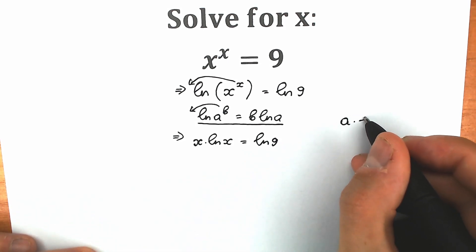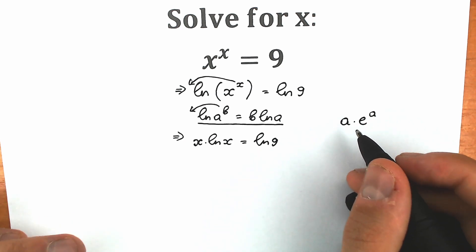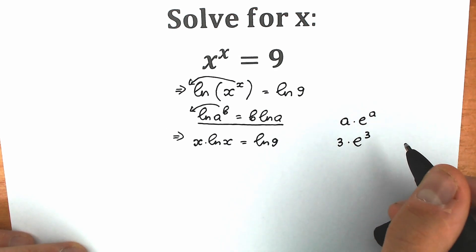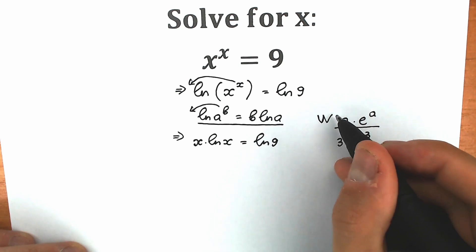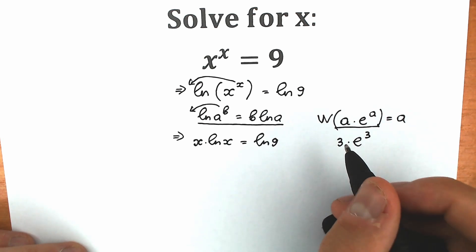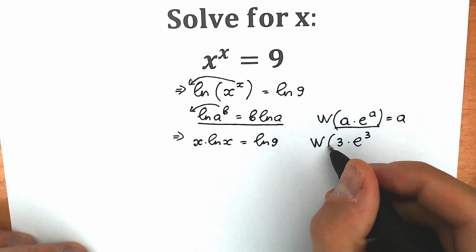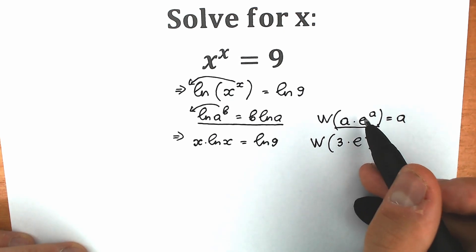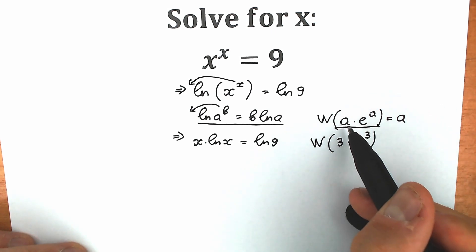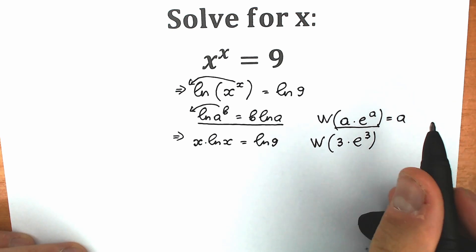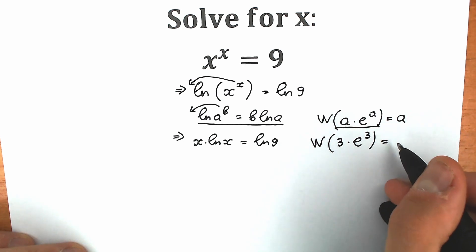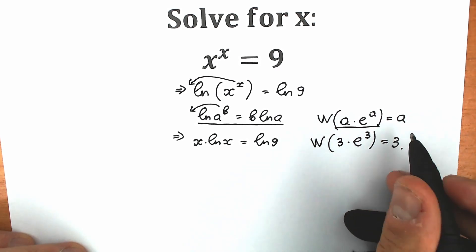When we have a times e to the power a — for example, if we plug in 3, we have 3 times e to the power 3 — this is the general case. When we apply the Lambert W function to this expression, the result is our a. So for 3 times e to the power 3, applying Lambert W gives us 3. It's extremely important that we have the same value a both as the coefficient and as the power of e.